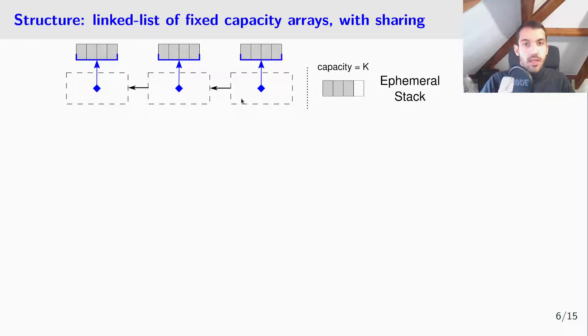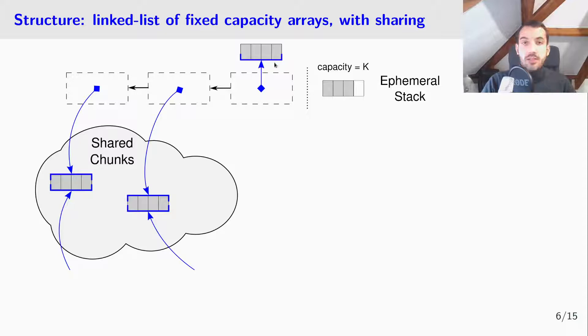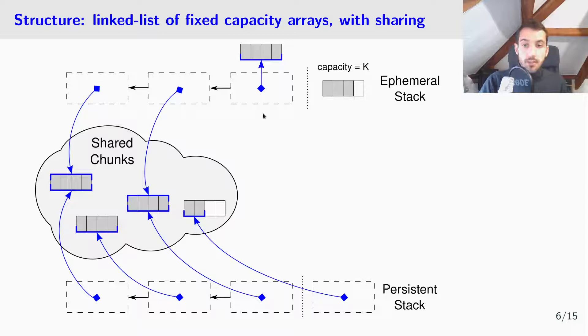We have then a tail of full chunks. And, as I said, some of these chunks may be shared. So, a chunk in the tail of an ephemeral stack is either uniquely owned, or may be shared with other structures. Typically, a chunk will be shared with a persistent stack, because a persistent stack always shares all of these chunks. Moreover, the head chunk of a persistent stack consists of a view of a prefix of a shared chunk for efficiency reasons.